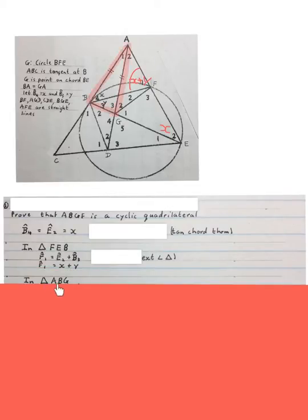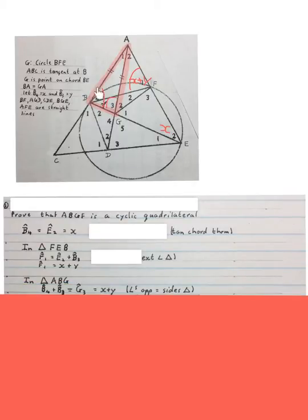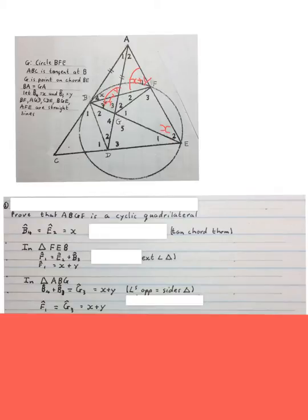Now we can write in triangle ABG, the red triangle again, B3 and 4 is equal to G3 over there, and that means is equal to X plus Y. Angles opposite equal sides of a triangle because we have an isosceles triangle. This angle will be equal to that angle, and that means this one's also going to be X plus Y.